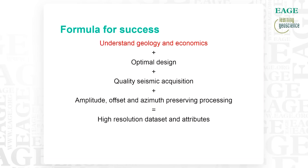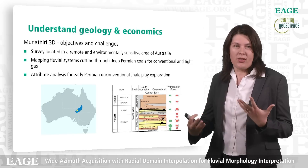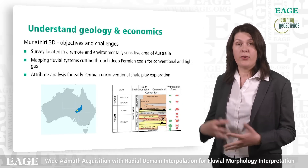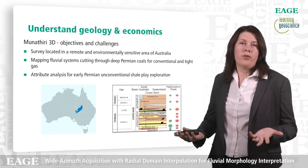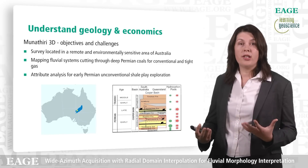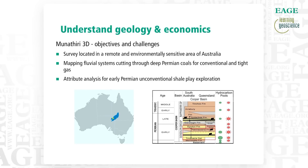The survey is located in a remote and environmentally sensitive area of Australia, which poses certain challenges not only for seismic acquisition but also for oil and gas exploration. For example, you cannot use pattern drilling or carpet shooting for seismic exploration. The geological objectives are also challenging. The primary objective is mapping fluvial systems cutting through deep Permian coals for conventional and tight gas. We would also like to do attribute analysis for sweet spot detection at the early Permian unconventional shale play.